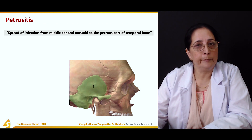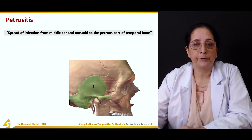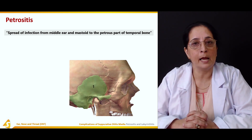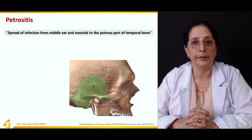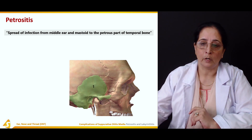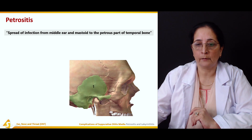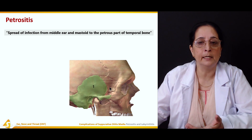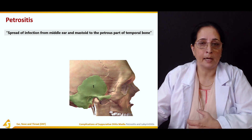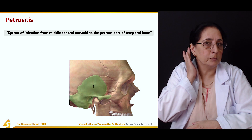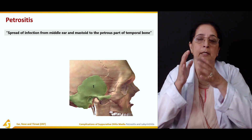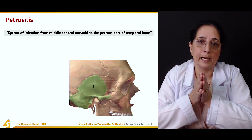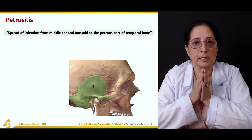First is petrositis. Petrositis is the spread of infection from the middle ear and mastoid to the petrous part of the temporal bone. The petrous part is very close to the mastoid, so infection can spread there and cause petrositis.